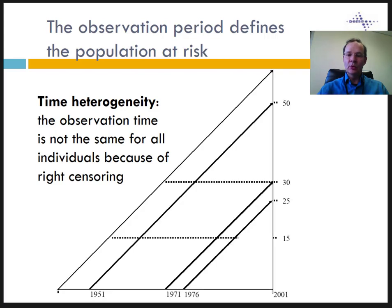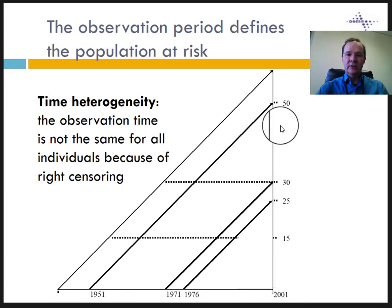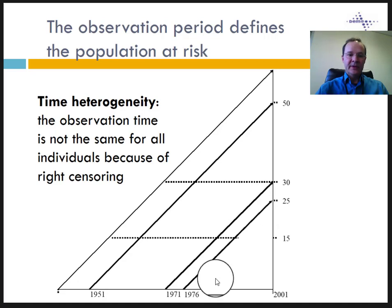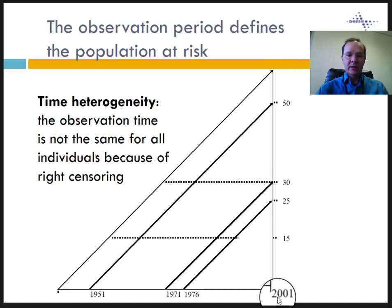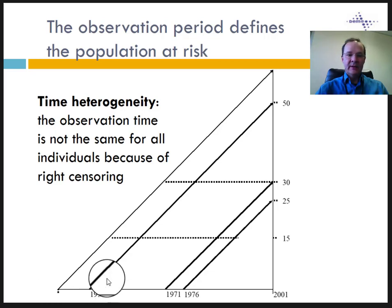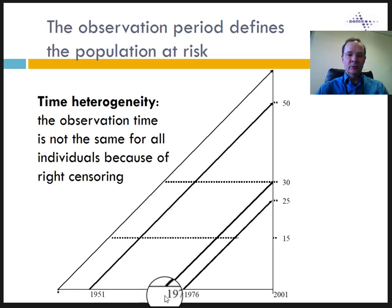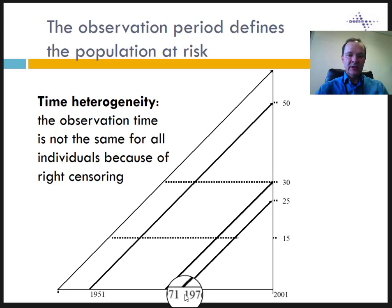This graph is called a Lexis diagram. The x-axis is calendar time, and the y-axis is age. The diagonals represent the lifeline of three individuals from their year of birth to the right censoring date, here 2001. The older individual was born in 1951 and therefore aged 50 at the time of last observation. Another individual was born in 1971 and is 30 at last observation in 2001. The youngest individual is 25 and was born in 1976.